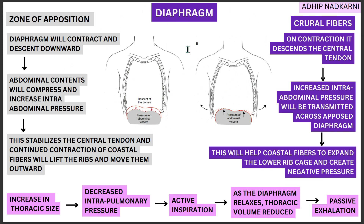Now in more detail: first, the diaphragm contracts and descends downward. The abdominal contents present below get compressed, which increases intra-abdominal pressure. This compression will then stabilize the central tendon — recall that all fibers converge to the central tendon at the center, and that tendon becomes stabilized because of the increased intra-abdominal pressure.